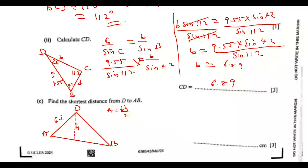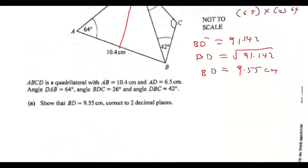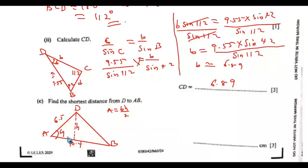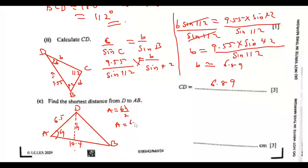In triangle ABD: AD equals 6.5 cm and AB equals 10.4 cm. Since we don't have the area directly, we calculate it using the formula involving two sides and the included angle: Area equals AD times AB times sin 64° divided by 2, which is 6.5 times 10.4 times sin 64° over 2.